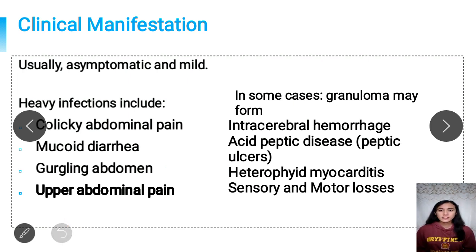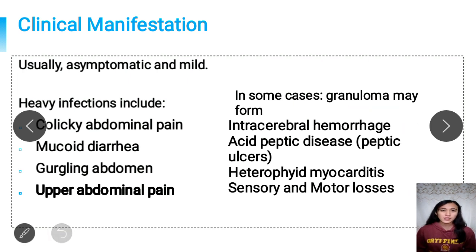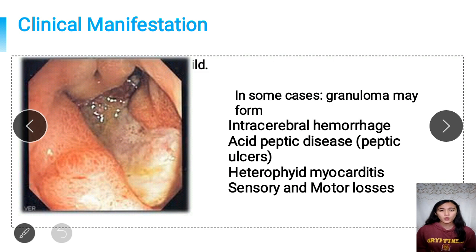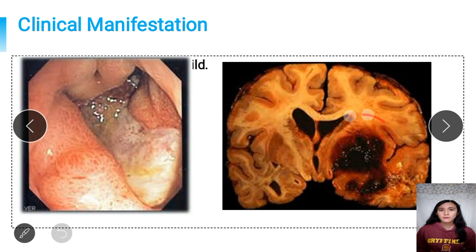In severe infections, a granuloma may form. If eggs are deposited in the brain, it can cause intracerebral hemorrhage, which can lead to sensory and motor losses. If eggs are deposited in the heart, it can cause heterophaeid myocarditis, which can lead to chronic heart failure. A study done in Compostela Valley found that the most common clinical manifestations were signs and symptoms of acid-peptic disease or peptic ulcers, probably due to thinning of the intestinal walls brought about by the actions of the adult worms. The picture shows intracerebral hemorrhage and inflammation in the intestinal walls.